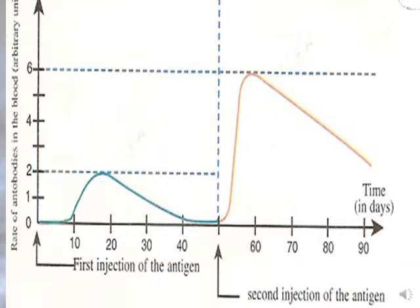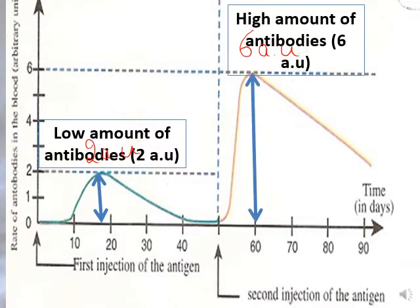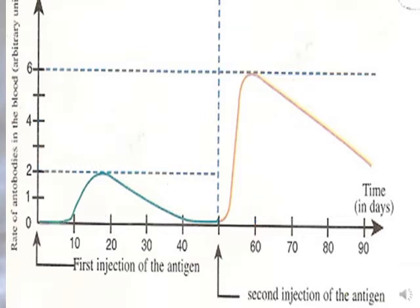Looking at the amount of antibodies: in the primary immune response it reaches about 2 arbitrary units, which is a low amount. In the secondary immune response the amount is much higher, reaching about 6 AU. So primary produces a low amount of antibodies while secondary produces a high amount.